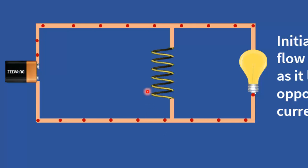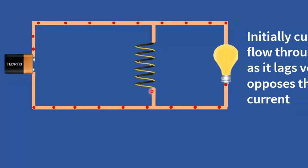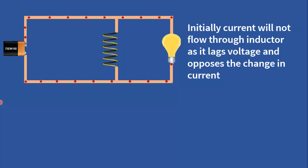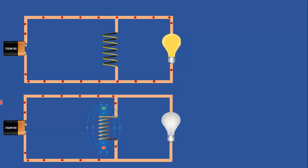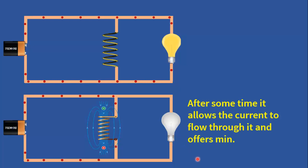However, the inductor initially opposes changes in current due to its inductance, which means it will not allow current to flow through it instantaneously. In a parallel configuration, the inductor will start to charge up. Once the circuit reaches a steady state, the inductor will create a path of low resistance, and as a result LED will turn off if the voltage across it is not sufficient to light up.